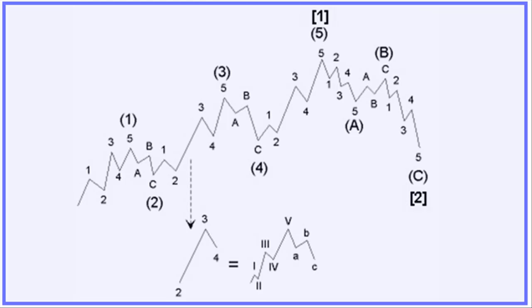Here you see the biggest wave consists of 1 plus 1 equals 2 waves. The biggest subdivision, brackets 1 to brackets C, consists of 5 plus 3 equals 8 waves. The next subdivision, 1 to capital C, consists of 21 plus 13 equals 34 waves. The following subdivision, Roman 1 to small C, consists of 89 plus 55 equals 144 waves. This subdivision is not limited.